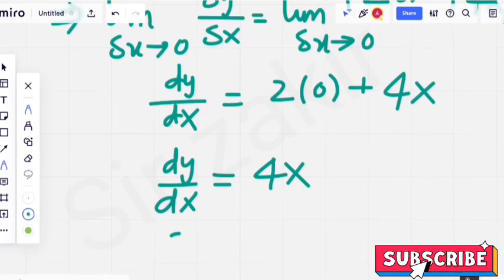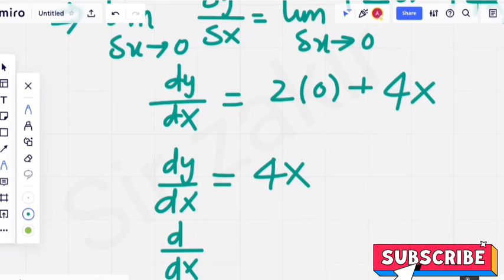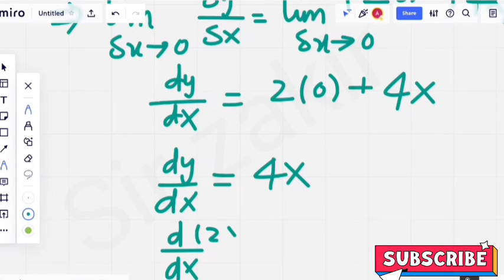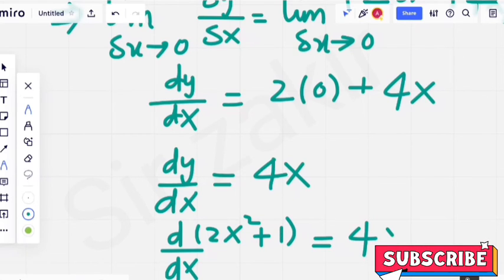If I write in place of y, what was it? d by dx of y. Y was 2x square plus 1. So its derivative is 4x. And this is the method to find it.